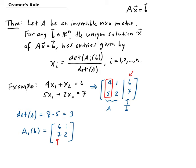So now we can calculate the determinant of A₁(B). The determinant of A₁(B) is going to be 12 minus 7, which gives us 5.